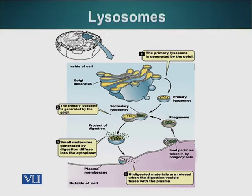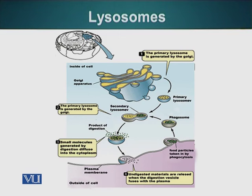These enzymes not only degrade proteins of cellular origin — they also degrade structures, proteins, and macromolecules that cells ingest through phagocytosis. When a cell comes across a food particle, it engulfs it and encloses it in a vesicle called a phagosome. When present in the cytoplasm, a vesicle containing lysosomal enzymes — called the primary lysosome — fuses with the phagosome to form a secondary lysosome. The lysosomal enzymes then degrade the ingested large molecules into smaller components that can be recycled.